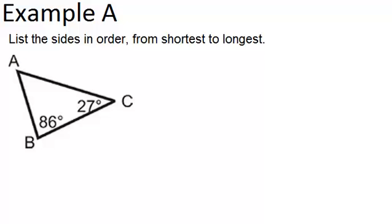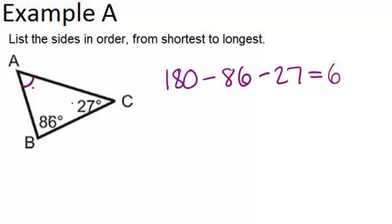The first thing we want to do is figure out this missing angle A, and you should remember that the three angles in a triangle add up to 180 degrees by the triangle sum theorem. So, if we want to find the measure of angle A, we can do 180 minus 86 minus 27, which is 67. So, this angle is 67 degrees.